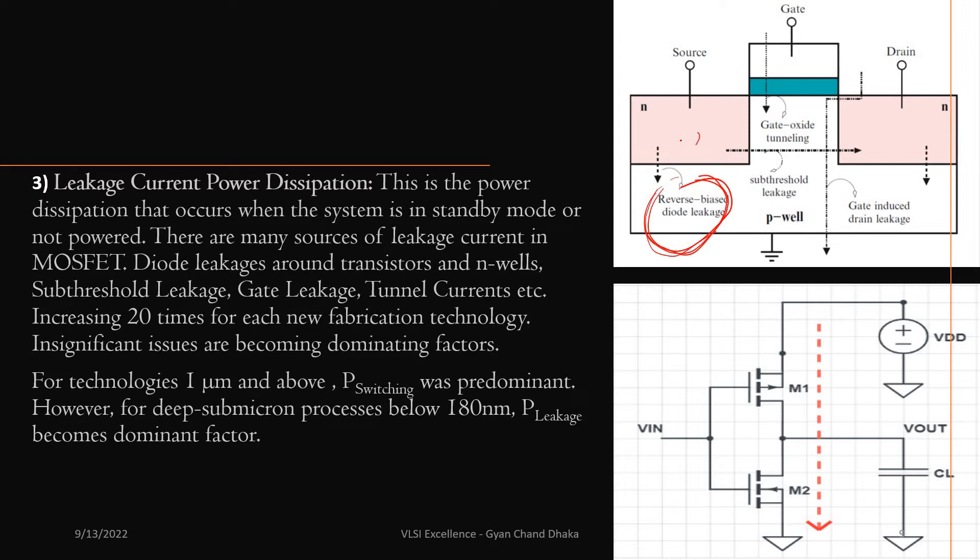In the transistor, between the n-channel and p-substrate, there is a diode formation. When the diode is in reverse bias condition, if there is a small current flowing through the diode, that is the reverse bias diode current.